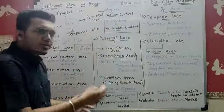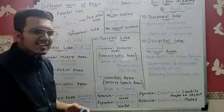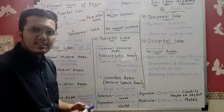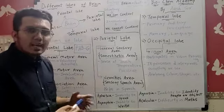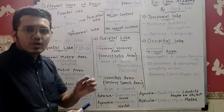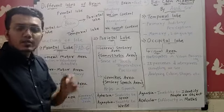So now if different lobes have head injury, accident, or any reason, if it is damaged completely or partially, what damage will occur? Then what happens?